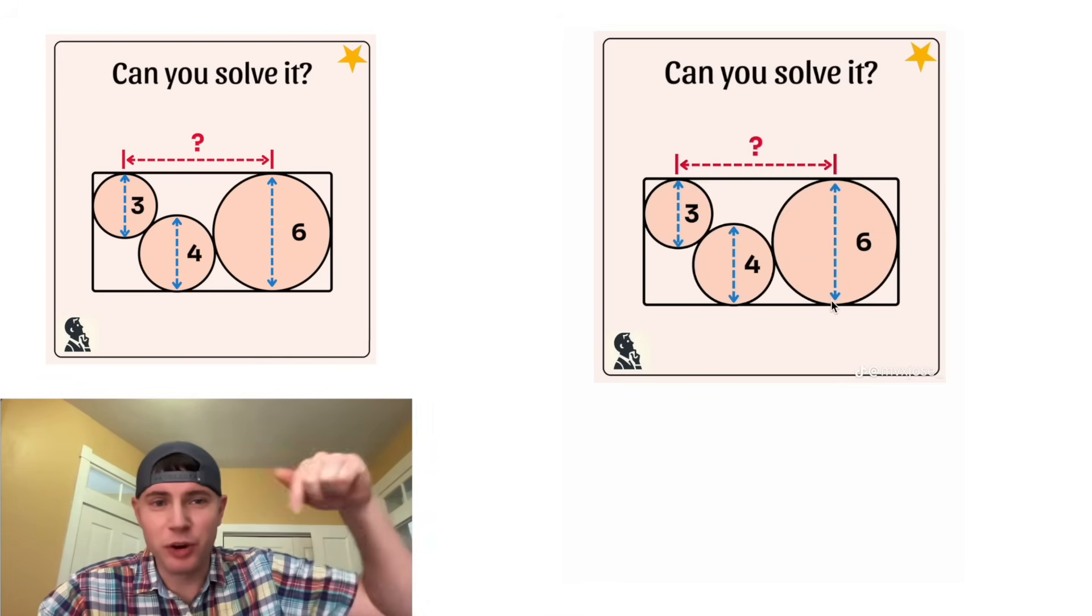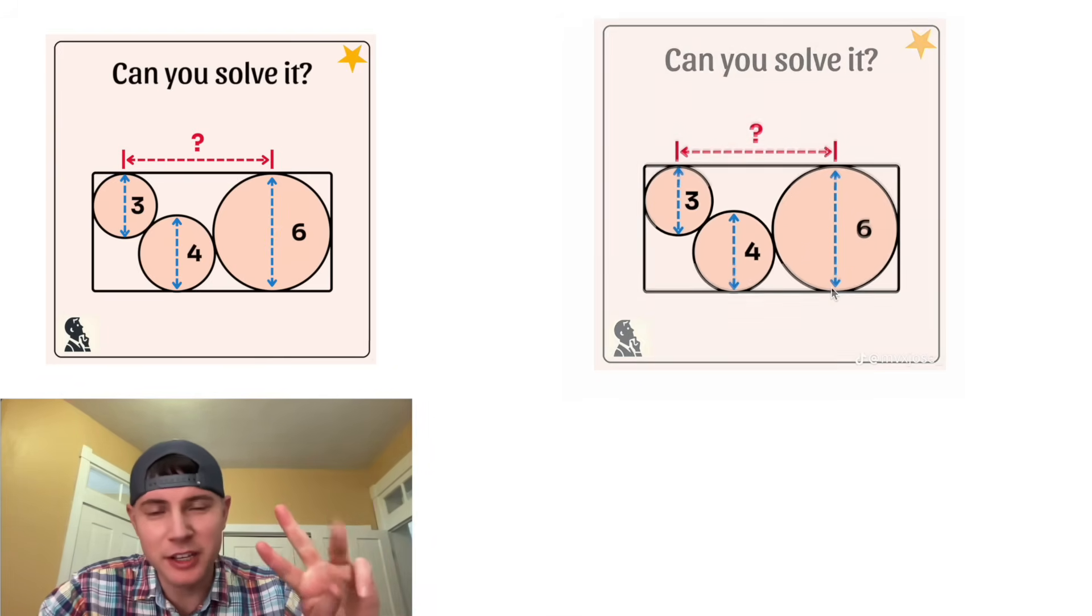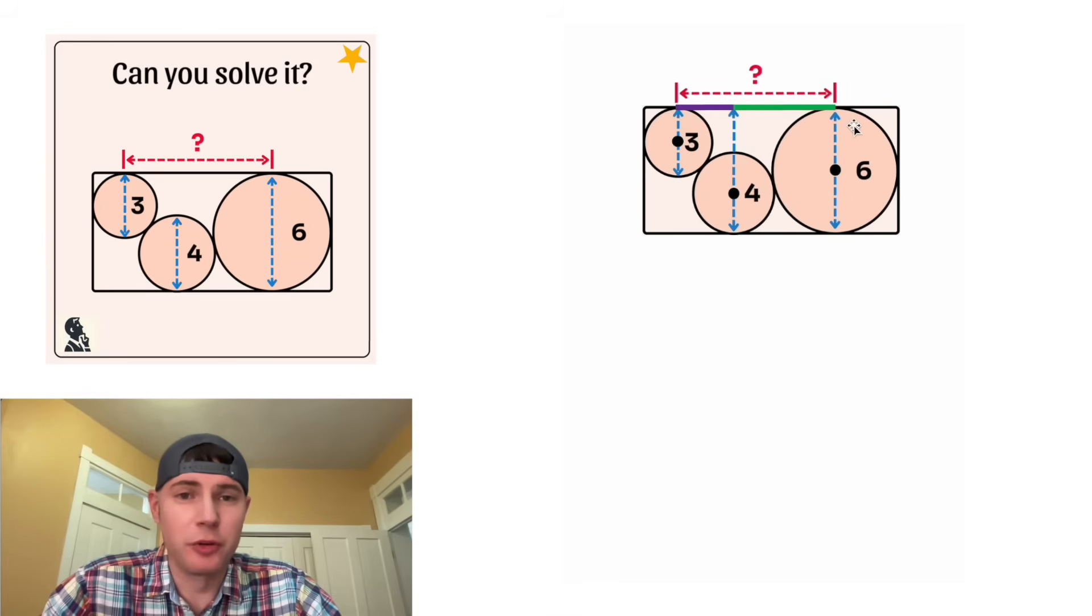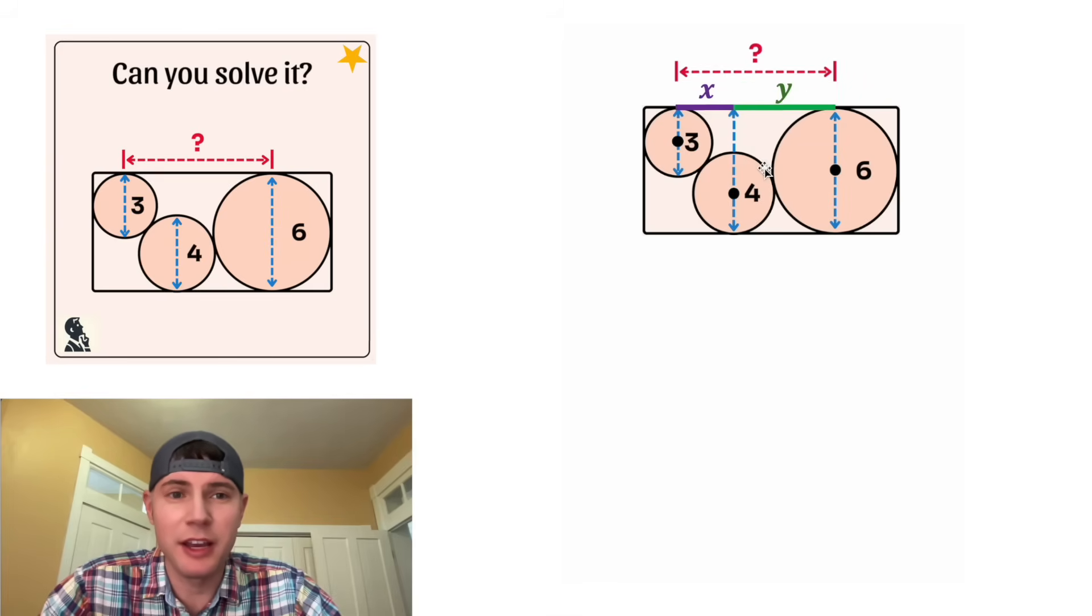If you want to try it on your own, pause it right now because I'm gonna solve it in three, two, one. First, let us label the center of each of the circles. Let's take this diameter and extend it up here and let's split this into a purple distance and a green distance. Let's call the purple distance X and the green distance Y. So ultimately, we're trying to find X plus Y.